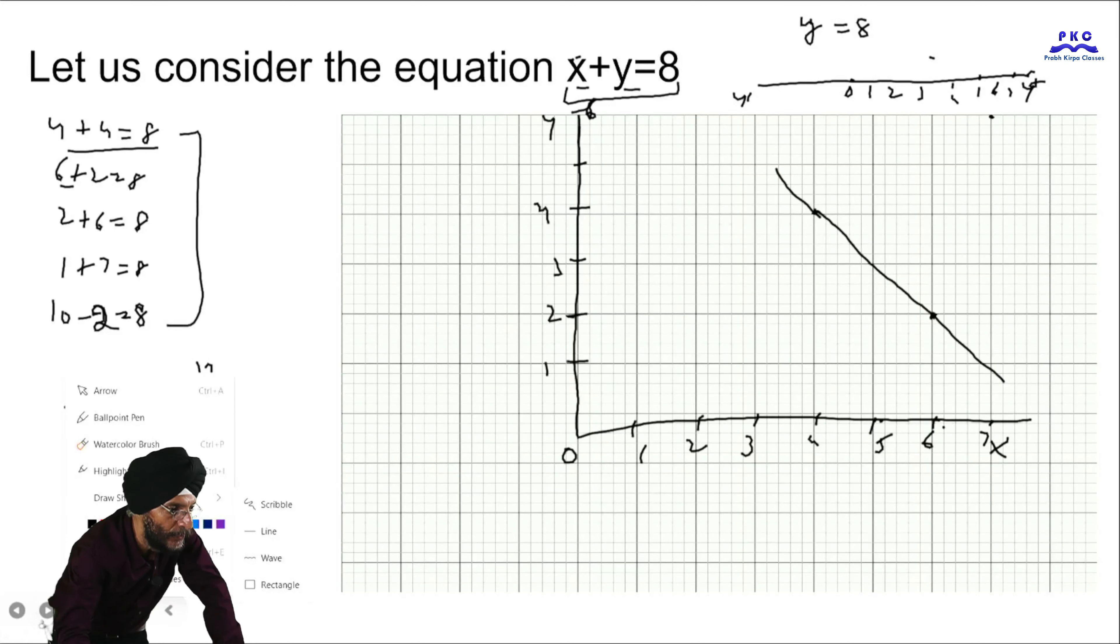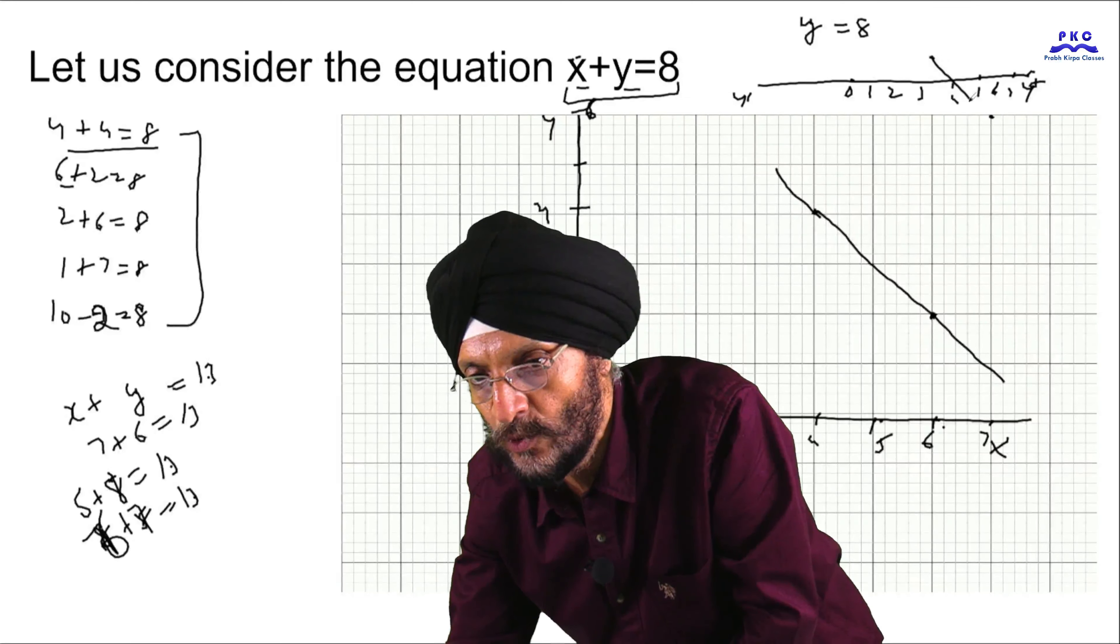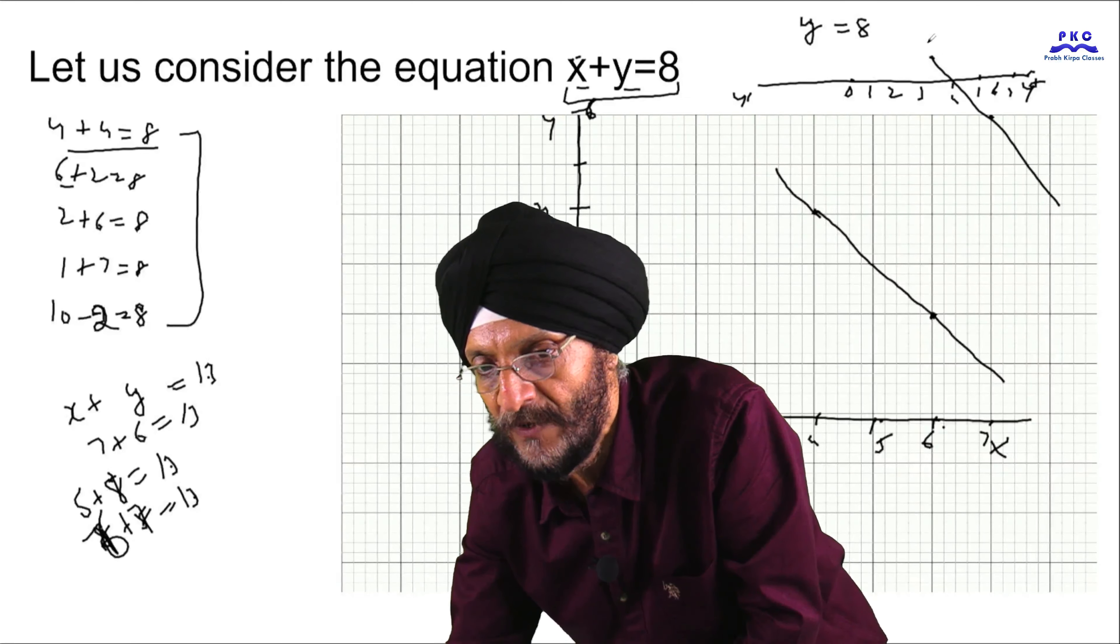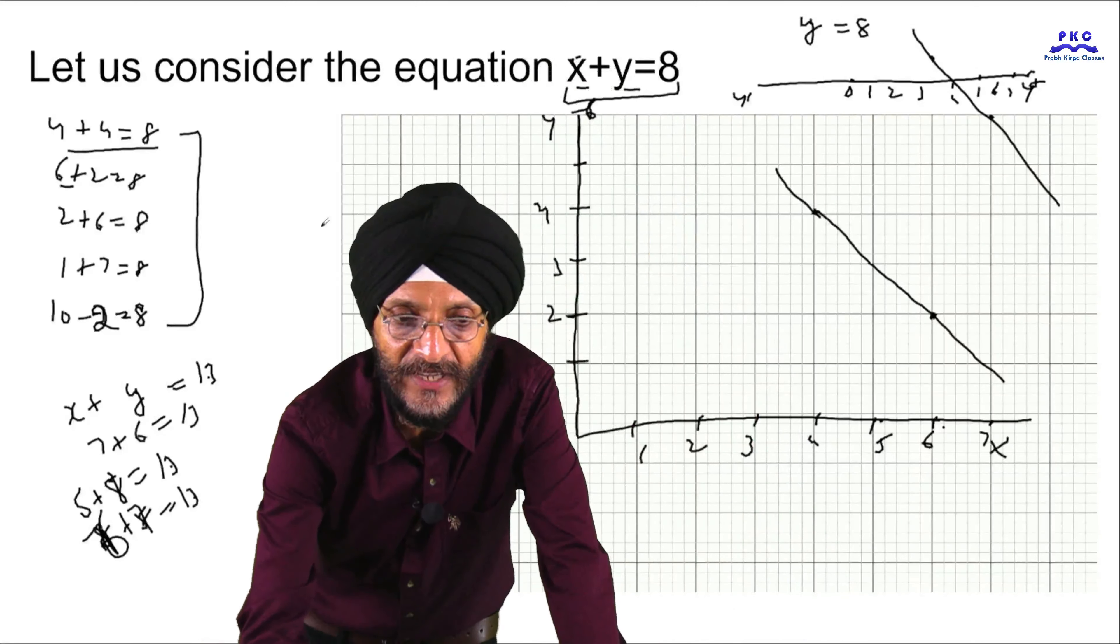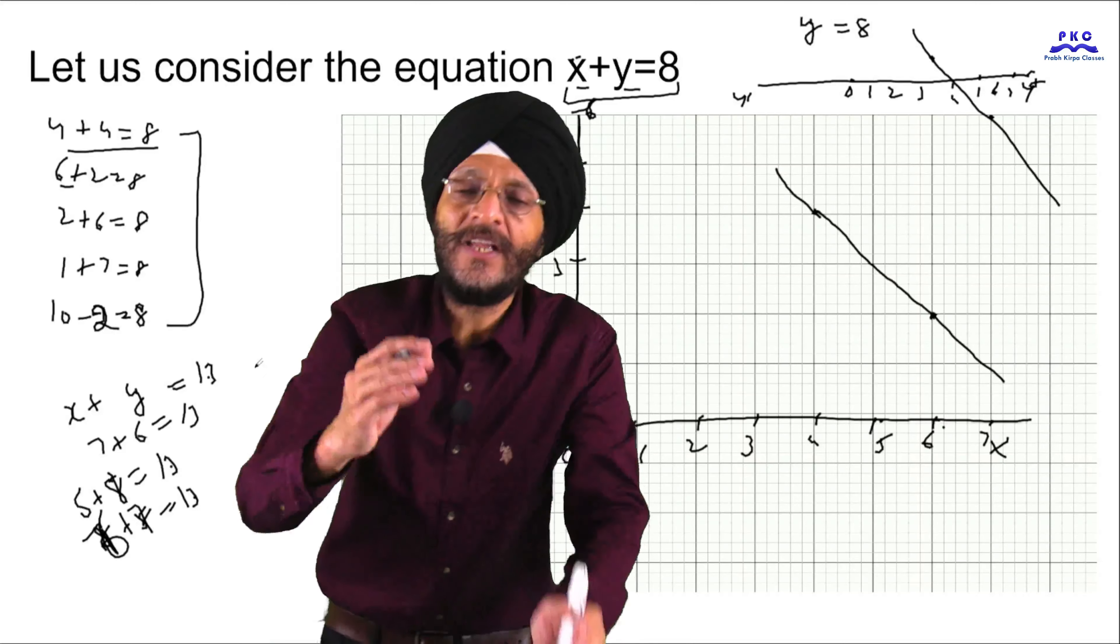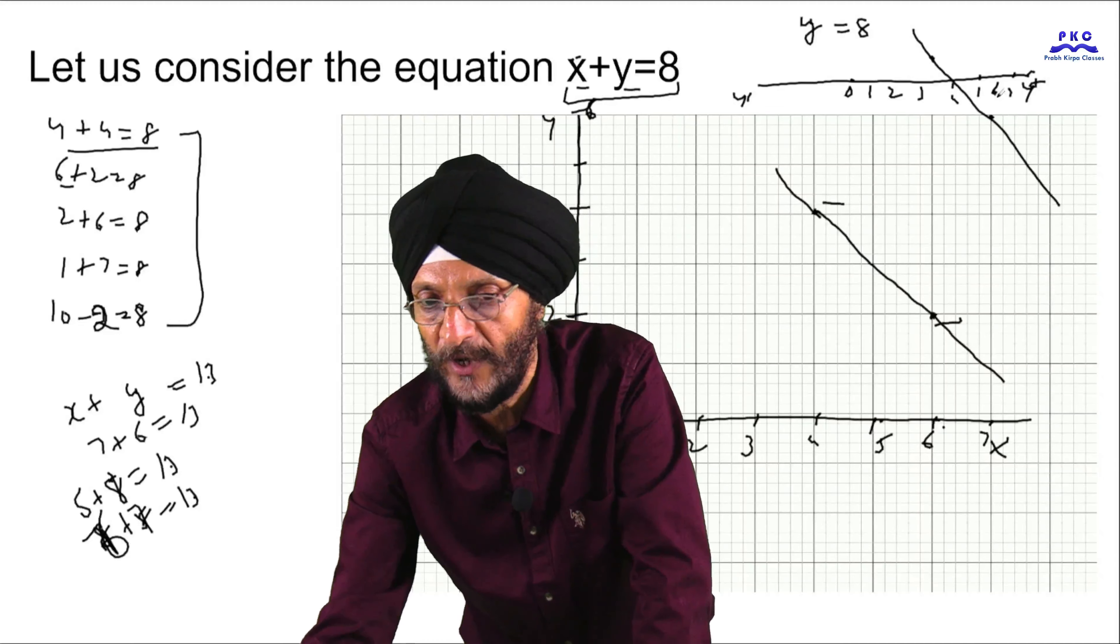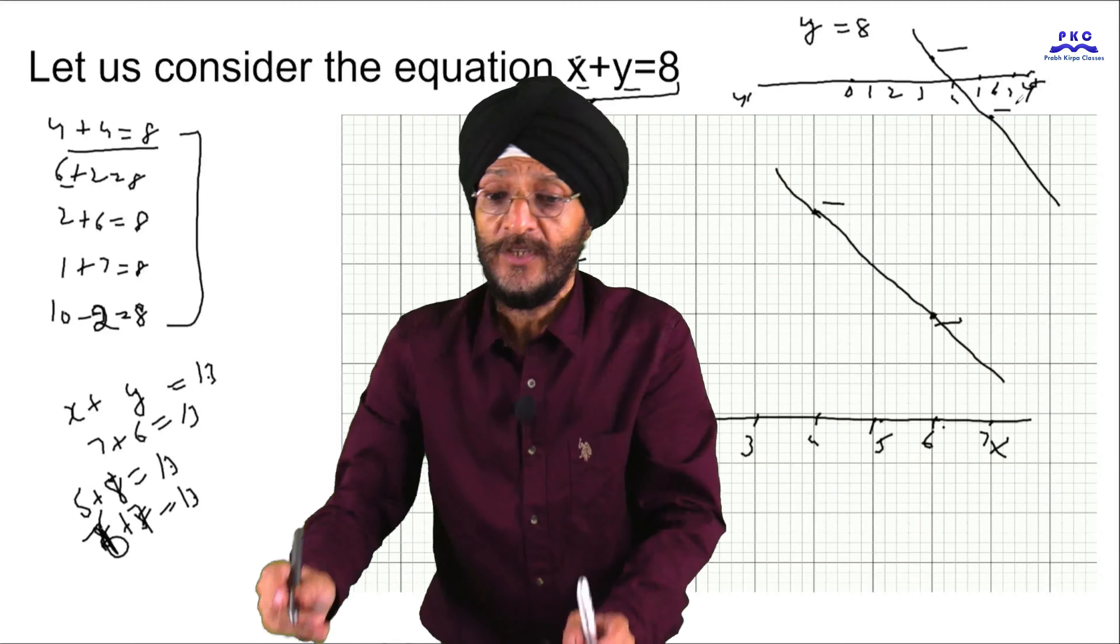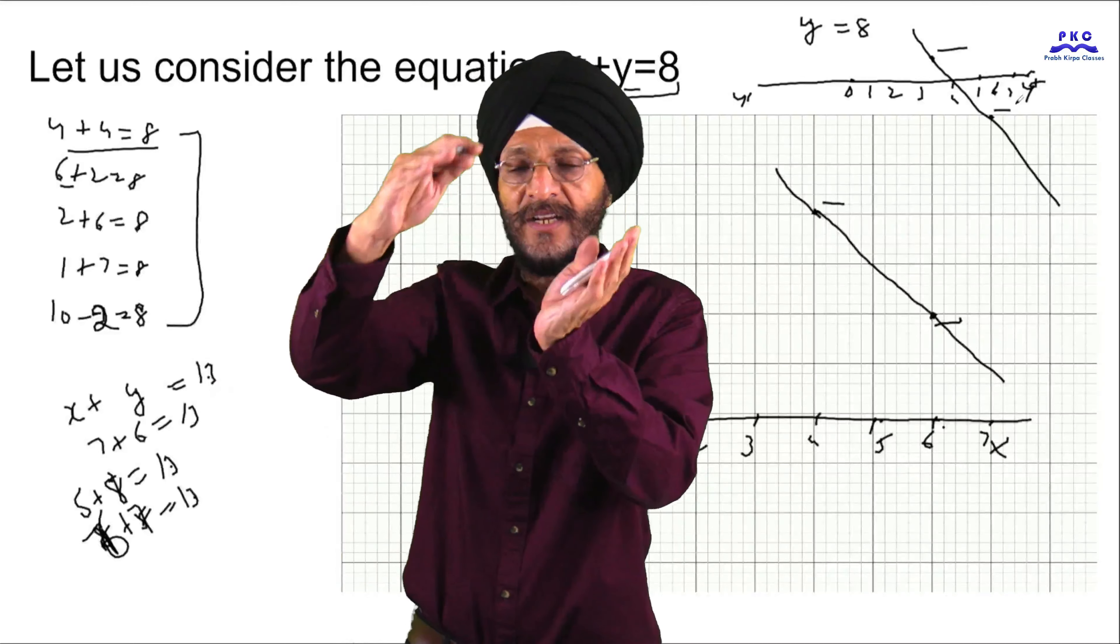Of course, in this chapter, we are going to solve the linear equations, where there are two pairs of equations. In this way, when there will be two equations, you will have to find out the two solutions, that is two points, this point, this point, this point and this point. You will have to find out the two solutions and you will have to draw the graph accordingly.